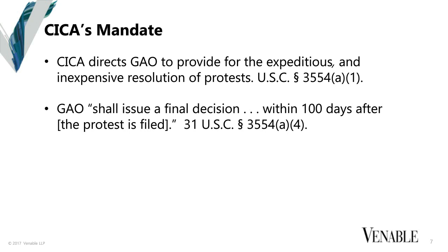Sometimes you get a panic call from a client because of a supplemental protest and when it was docketed, it looks like the decision date is going to slip to the right. But except in the rarest of circumstances, the GAO is going to do everything they can to get the decision issued within 100 days after the initial protest was filed.